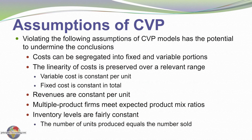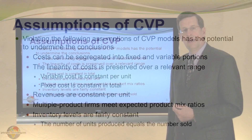Finally, we need to consider a final assumption and that is that inventory levels are fairly constant — that is, we are selling the number of units that we're producing. To do otherwise would throw our analysis off because some of the fixed cost for a period could become embedded in inventory or pulled out of inventory from a prior period, and our profitability performance could be different than anticipated.